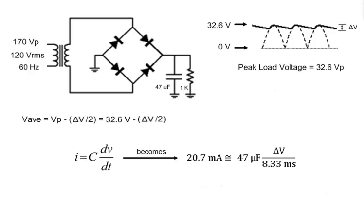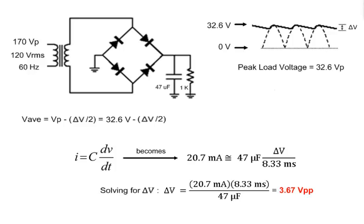Plugging in the known values and rearranging to solve for the ripple voltage gives us 3.67 peak-to-peak volts. That's delta-v.